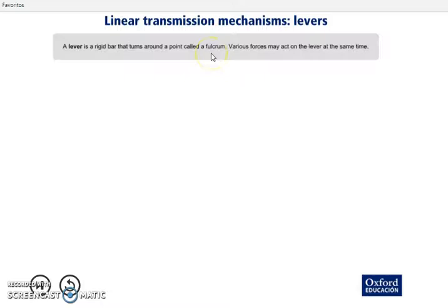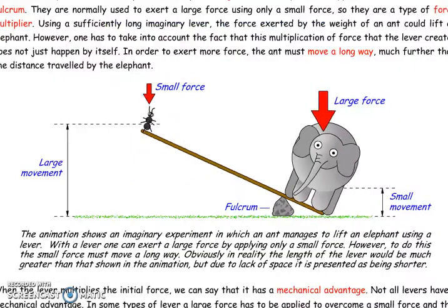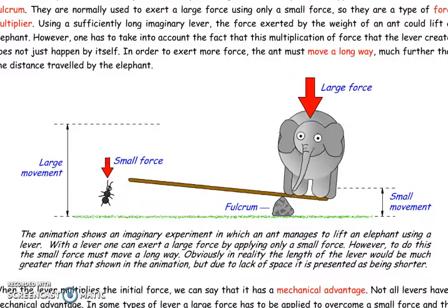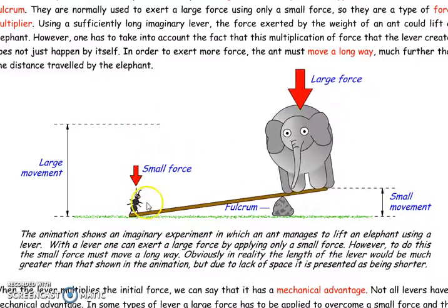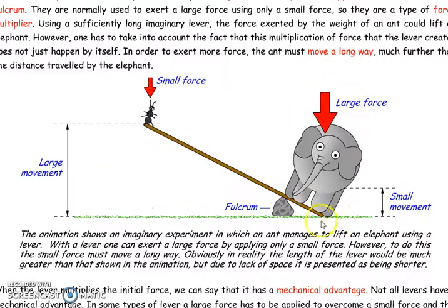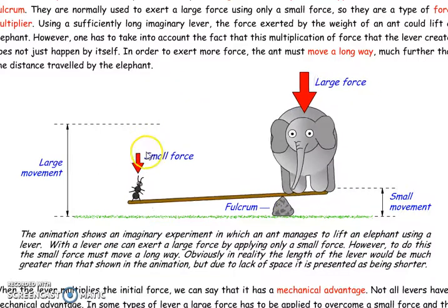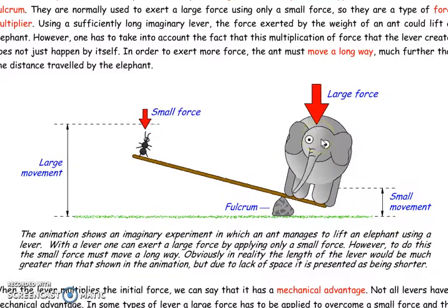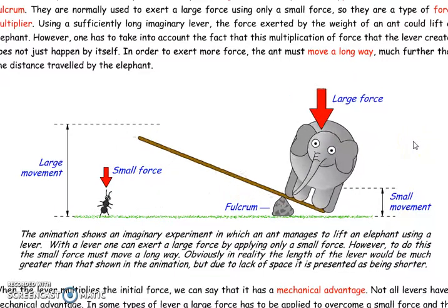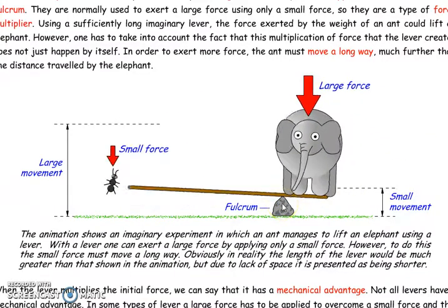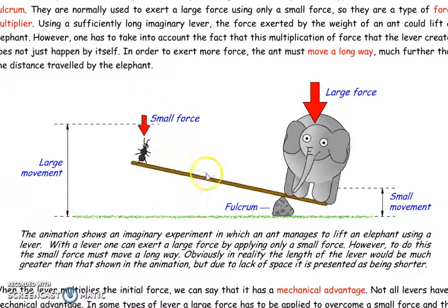Don't forget it. On a lever, various forces may act. Let's see one example. This is a lever. As you can see, we can distinguish the bar, the point of support called fulcrum, and two forces — one and two. Two different forces, a fulcrum, and the bar.